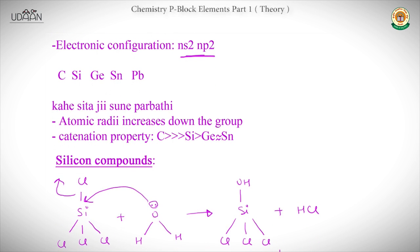An important property of group 14 is catenation — the tendency of an atom to bond with similar atoms. Carbon forms large numbers of C-C bonds in organic chemistry, forming polymer chains. This extensive catenation is called the catenation property. Silicon has less catenation than carbon, and Germanium and Tin have almost negligible catenation.